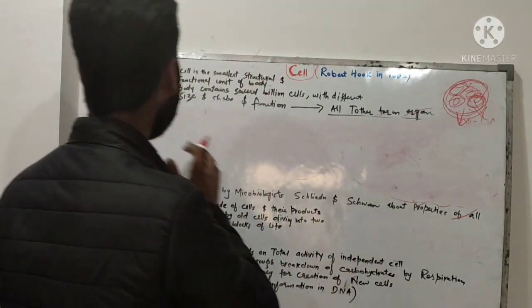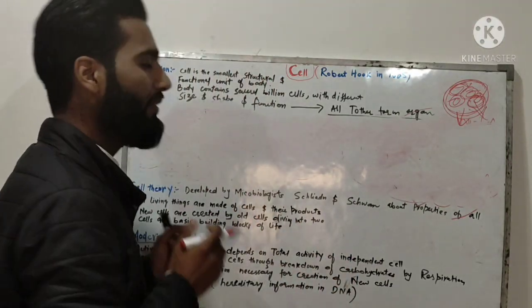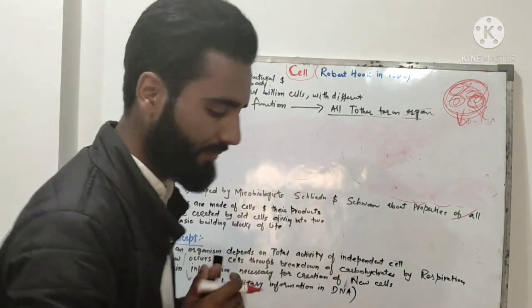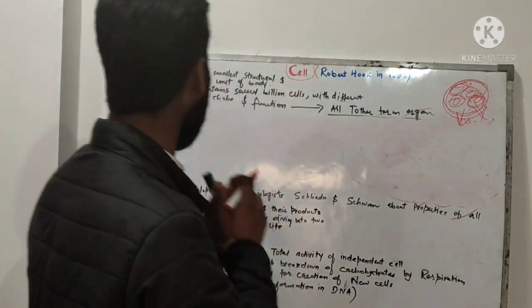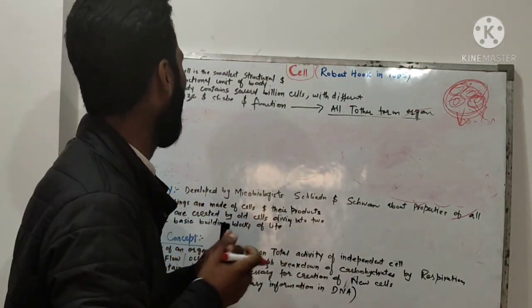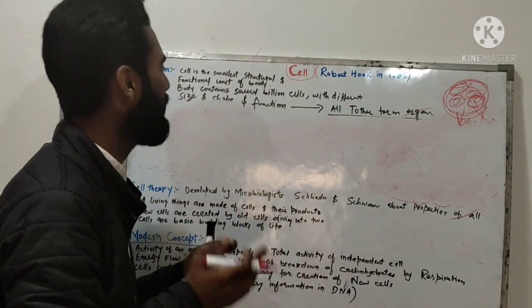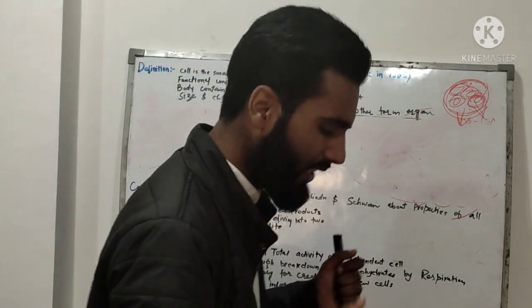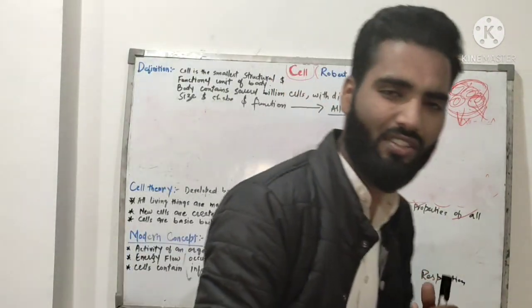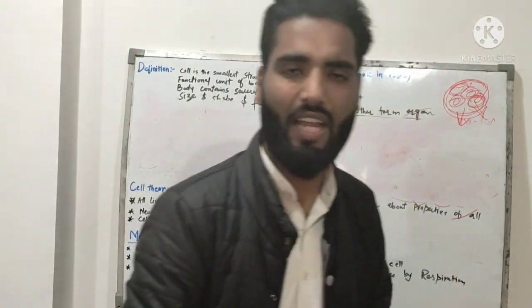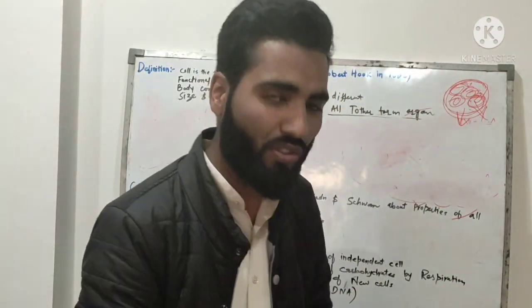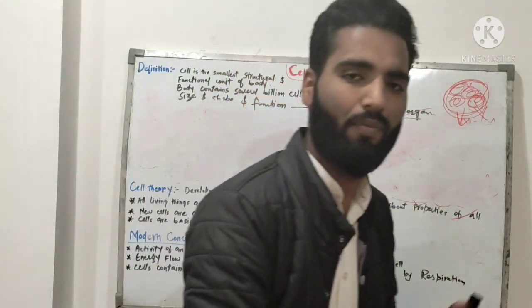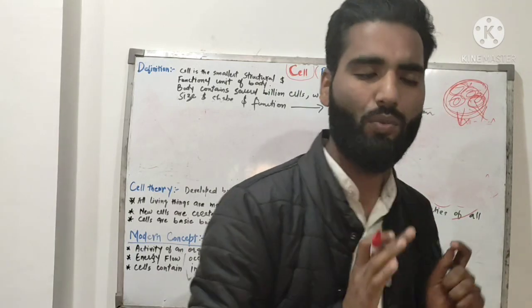Now we will see the definition of cell. Cell is the smallest structural and functional unit of the body. The cell is the smallest functional and structural unit of life.